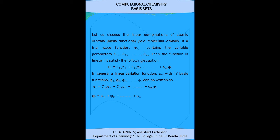In general, a linear variation function psi_n with n basis functions phi_1, phi_2, phi_3, ..., phi_n can be written as: psi_n = c1n·phi_1 + c2n·phi_2 + ... + cnn·phi_n. That is, psi_n equals psi_1 + psi_2 + ... + psi_n.